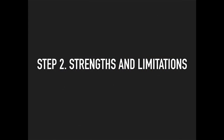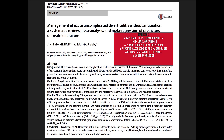Now we move on to strengths and limitations. Diverticulitis is an important topic and very common — one of the commonest acute surgical presentations. Being a meta-analysis and systematic review, it represents a high level of evidence, referring to the Oxford Hierarchy of Evidence Pyramid. This study was done in accordance with the PRISMA guidelines, which are the reporting standards for meta-analysis and systematic reviews. The primary outcomes are clinically meaningful, and having such a large number of patients ensures an adequate sample size for statistical significance.